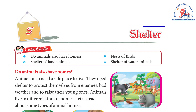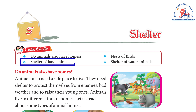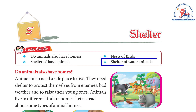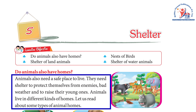Chapter 5: Shelter. Learning objective: Do animals also have homes? We will cover nests of birds, shelter of land animals, and shelter of water animals. Animals also need a safe place to live — they need shelter to protect themselves from enemies, bad weather, and to raise their young ones. Animals live in different kinds of homes.